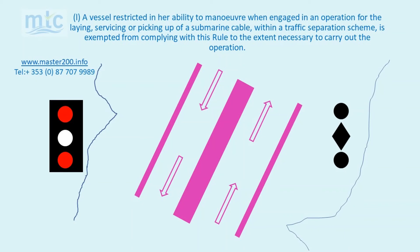A vessel restricted in her ability to manoeuvre when engaged in an operation for the laying, servicing or picking up of a submarine cable within a traffic separation scheme is exempted from complying with this rule to the extent necessary to carry out the operation. A vessel laying, servicing or picking up a submarine cable and exhibiting the lights or shapes prescribed in Rule 27b may be exempt from compliance with Rule 10, and may even be justified in proceeding in a direction opposite to the general direction of traffic flow. However, they are expected to comply with Rule 10 whenever possible.